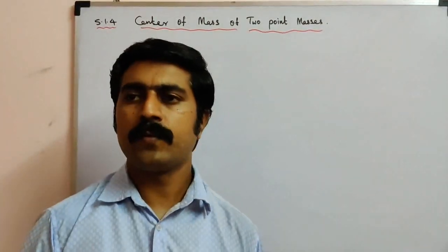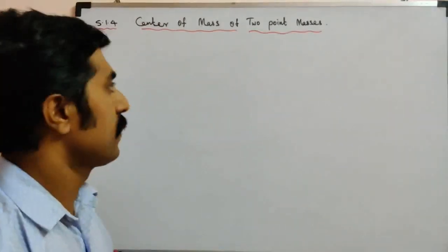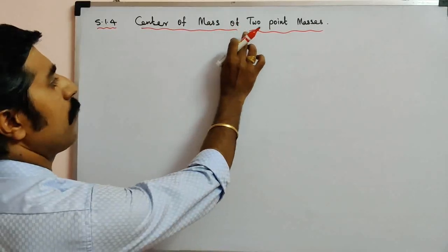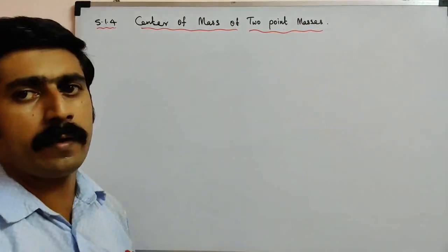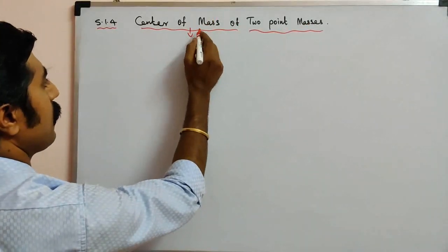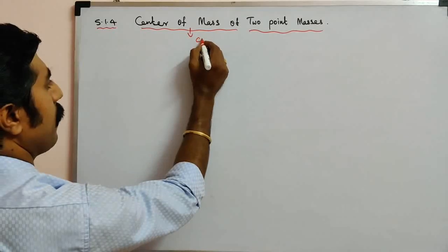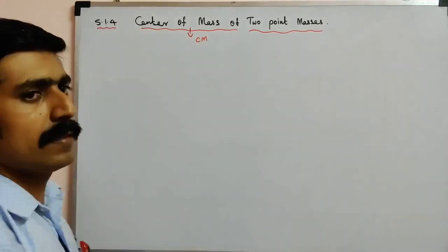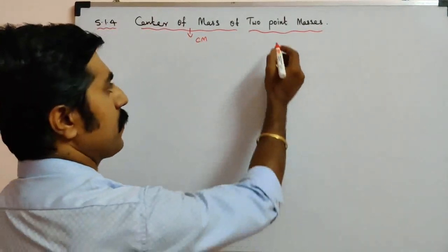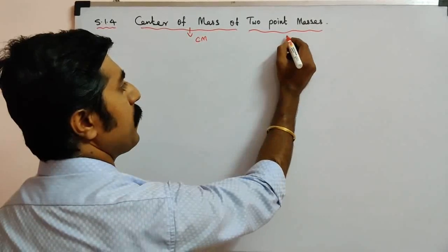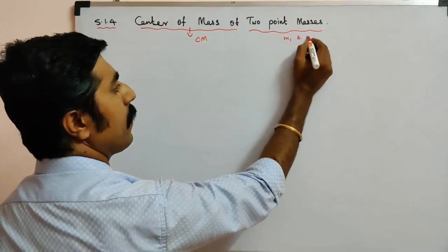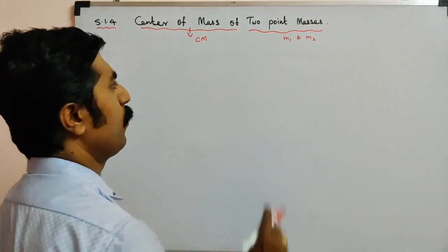Hi students, today's topic is center of mass of two point masses. Center of mass is denoted by the letters CM. Center of mass of two point masses means one is M1 and another one is M2.